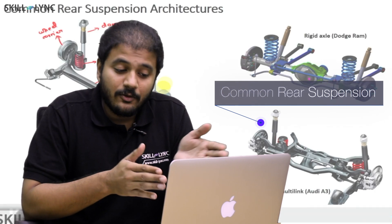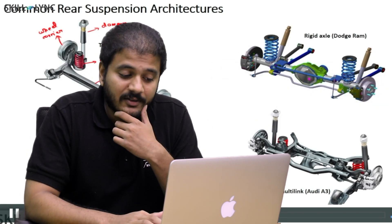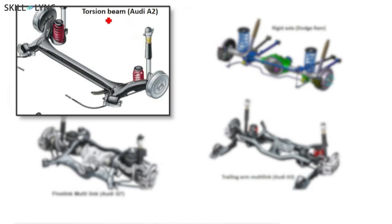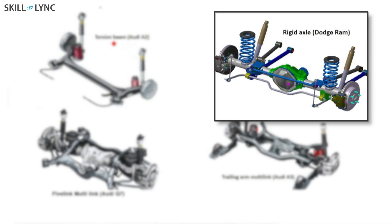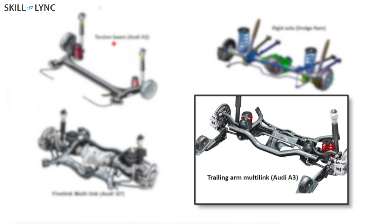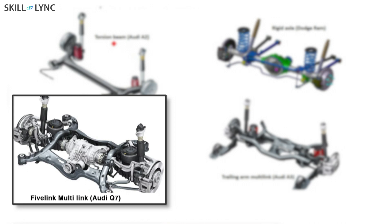You can see that the rear suspension architectures can be quite different. For example, in the Audi A2 you have the torsion beam, whereas if you take a look at the Dodge Ram, which is a utility vehicle, you have a rigid axle. If you look at the Audi A3, you have a trailing arm multi-link suspension, whereas if you take the Q7, you have a five-link multi-link suspension system.